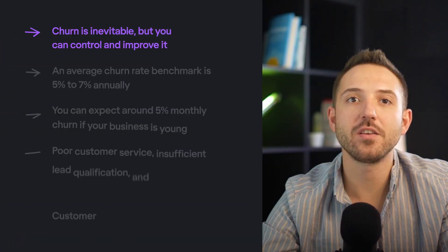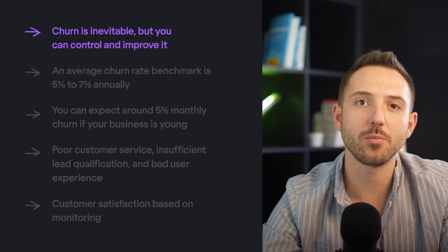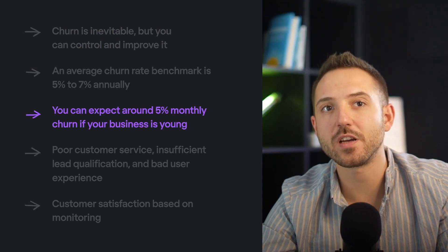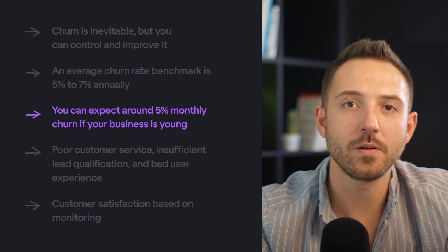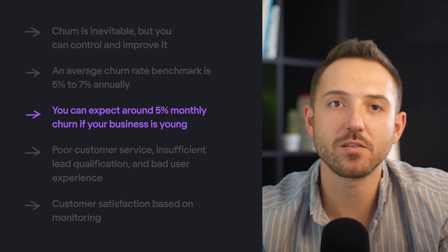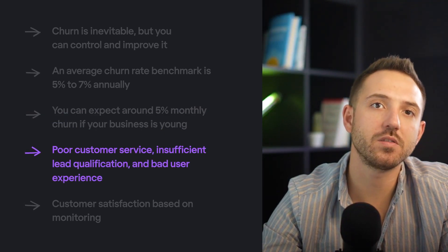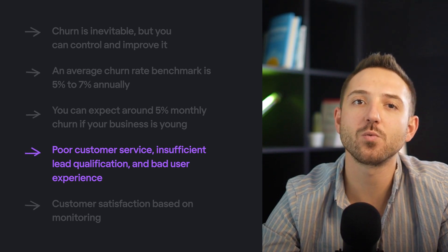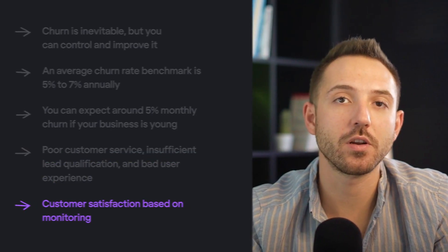Let's summarize. Churn is inevitable, but you can control and improve it. The churn rate benchmark is 5–7% annually. You can expect around 5% monthly churn if your business is young and targets small to mid-sized businesses. Poor customer service, inefficient lead qualification, and bad user experience are among the reasons why clients churn. A well-conducted analysis will help you reduce your churn rate. And from my experience leading a UX design agency for SaaS products, I'm confident that customer-oriented design and great user experience can help you reduce churn.